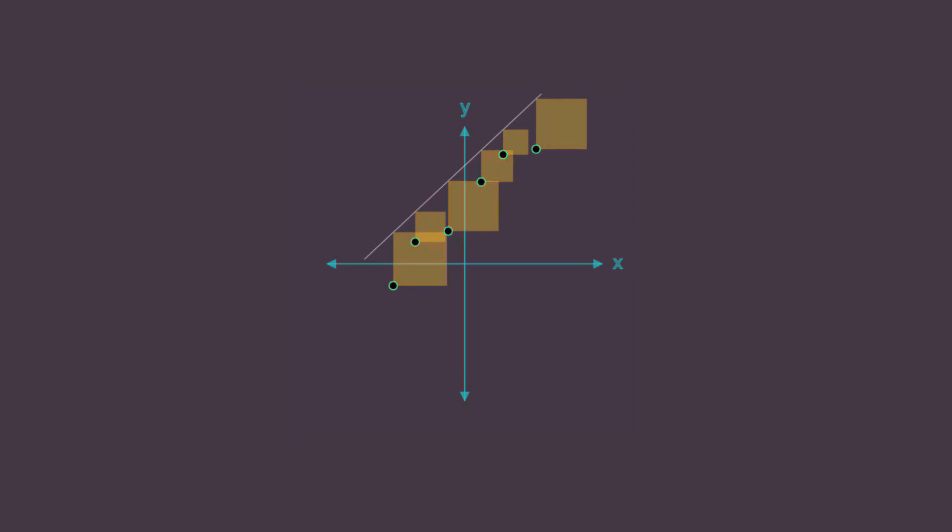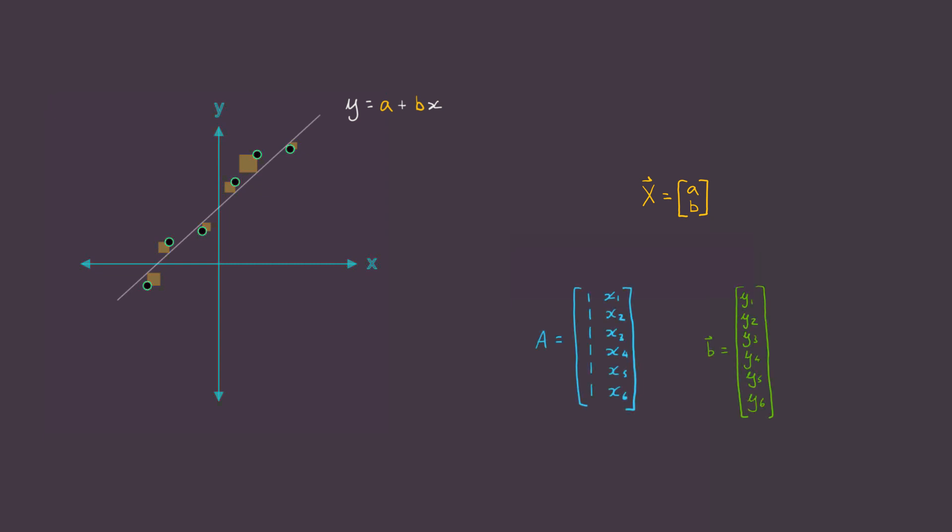In that video, we talked about how the ordinary least squares method can be used to find a curve that best fits data. Specifically, we created a vector x, which contained our unknown parameters that defined our fit. And we also showed how to create an A matrix and a B vector from our input data set.